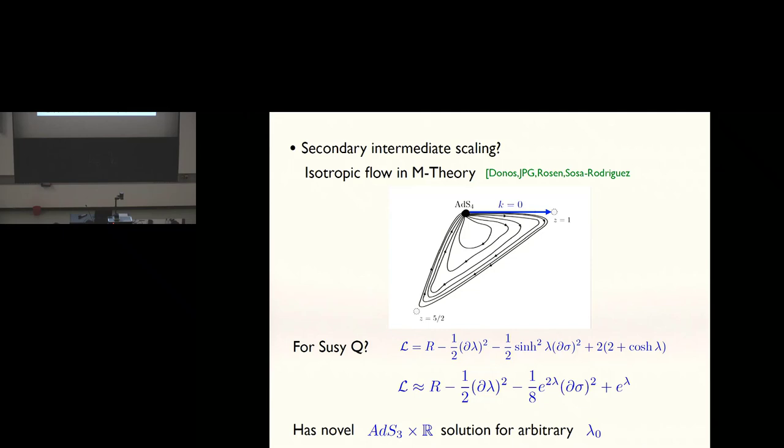I can see the chair standing up. I'm going to just flash that up. If you want to ask me after the talk you can do. It's the fact that in addition to the intermediate scaling I mentioned you can have another possible intermediate scaling for these boomerang flows. I don't expect you to understand that. If you're curious speak to me afterwards. Thanks.